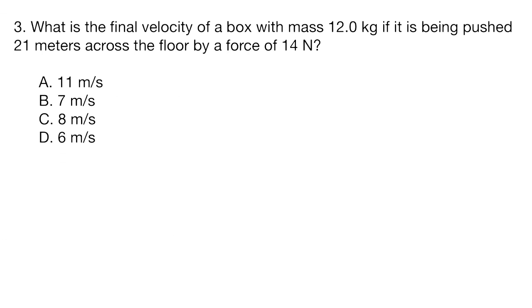Question three, what is the final velocity of a box with mass 12 kilograms if it is being pushed 20 meters across the floor by a force of 14 newtons? A, 11 meters per second, B, 7 meters per second, C, 8 meters per second, or D, 6 meters per second.